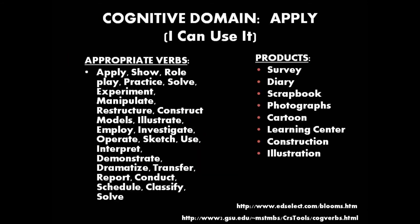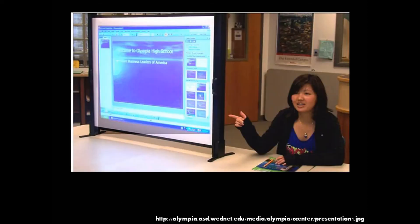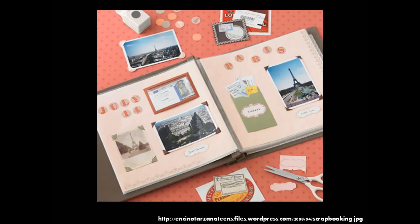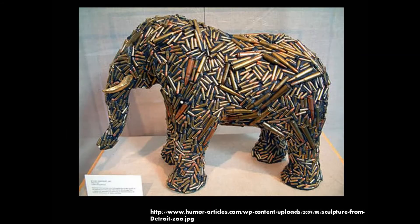The third subgroup is apply, or 'I can use it.' This is the ability to use a learned skill in a new situation. When asking your students to show the skill, some verbs could be show, manipulate, or classify. Common products could be a scrapbook, draw a cartoon, or make a sculpture.